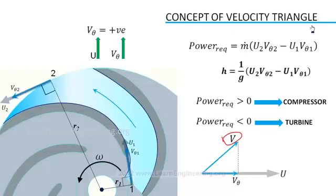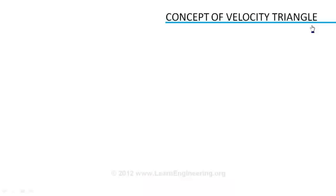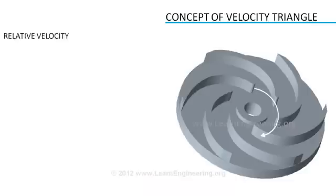The key idea in turbomachinery is concept of relative velocity. Suppose you are standing on this rotating turbomachine. The velocity of fluid you experience while moving with it is called as relative velocity. If fluid is having an absolute velocity V, and the blade is moving with a velocity U, then relative velocity experienced will be V minus U.